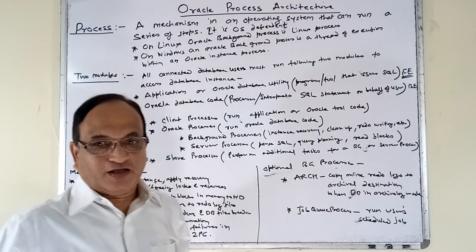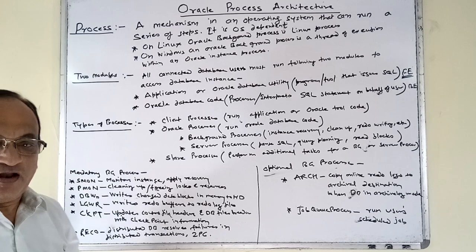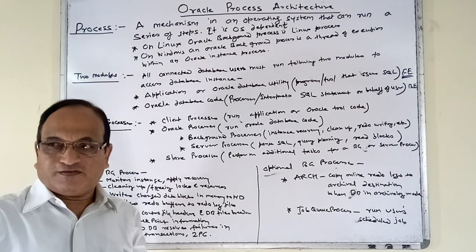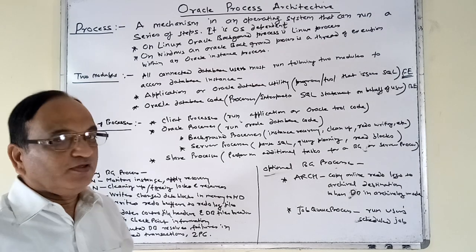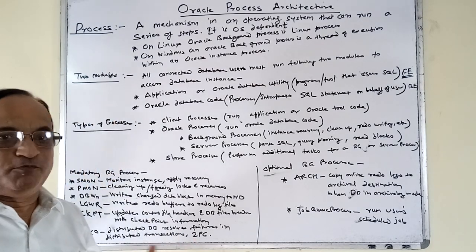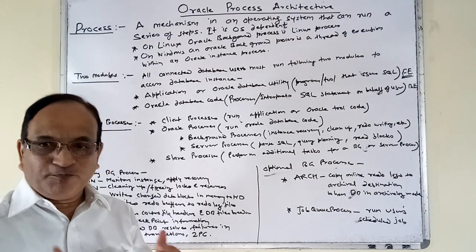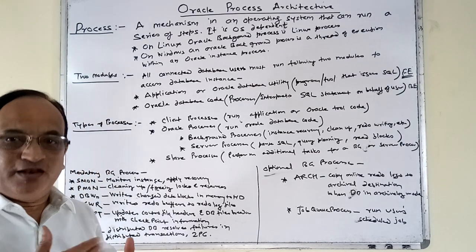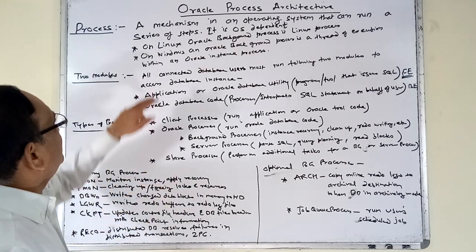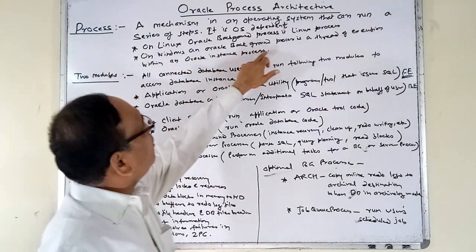On Linux, an Oracle background process is a Linux process. When we run Oracle on the Linux platform and list the processes with the ps command, we find that all Oracle processes run as Linux processes — every process is a Linux process.